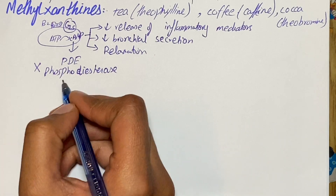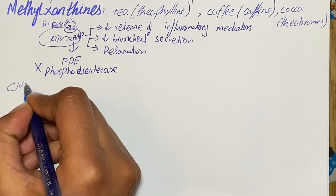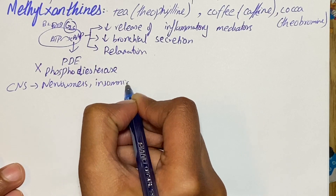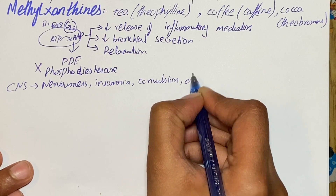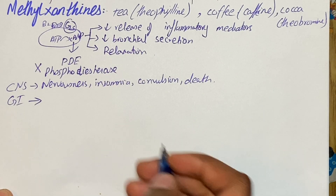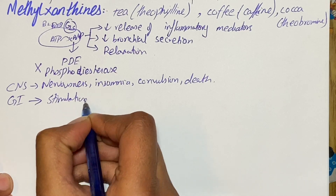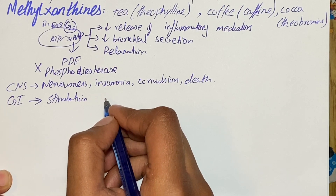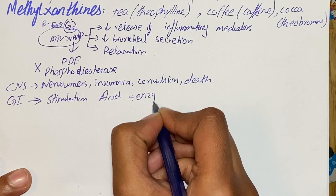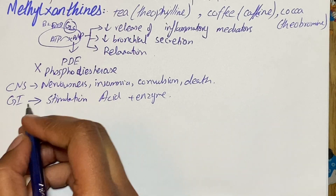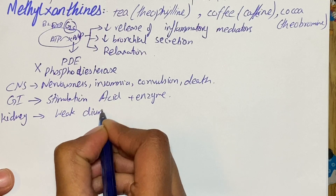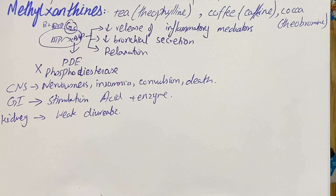Methylxanthines can cause CNS effects such as nervousness, insomnia, convulsions, and in extreme cases death. If we talk about GI tract stimulation, there is stimulation of secretions of both gastric acid and digestive enzymes. On the kidney, methylxanthines have a weak diuretic effect — if you have ever observed, there is increased urination after you take tea or coffee.